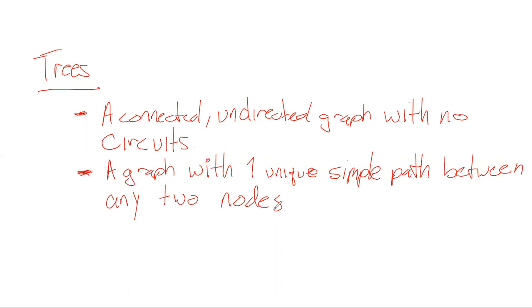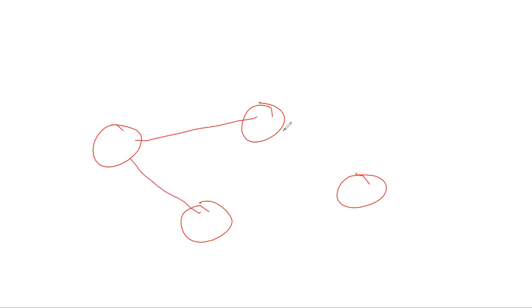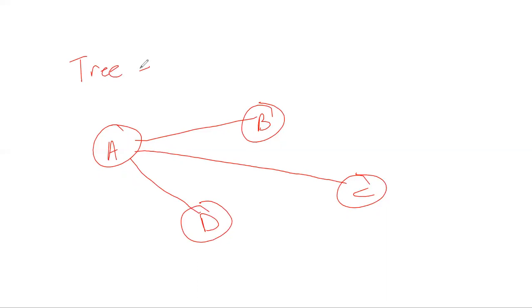This is the basic definition of a tree. An example would be a graph that is undirected, connected, and has no cycles or circuits. Using our equivalent statement, this is a graph with one unique simple path between any two nodes — if you pick any two nodes, there is one way to get between them on a simple path without cycling or backtracking.